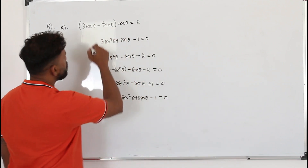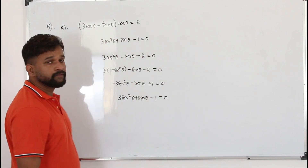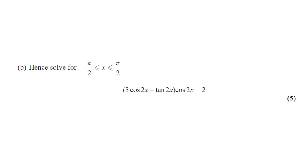That's the required equation. Part B: hence solve for x in the interval minus π over 2 to π over 2 the equation 3 cos 2x minus tan 2x times cos 2x equals 2. This part is worth 5 marks.